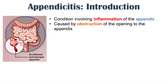Appendicitis is caused by an obstruction of the opening to the appendix. If we look at the gastrointestinal system, the small intestines eventually lead into the large intestine. The first part of the large intestine is where the appendix is located — it juts off of that first portion. Some kind of obstruction blocks the opening to the appendix, causing inflammation and enlargement of the appendix.